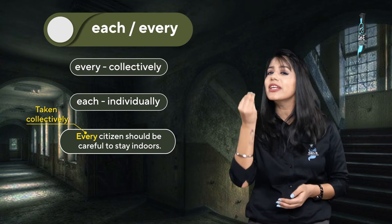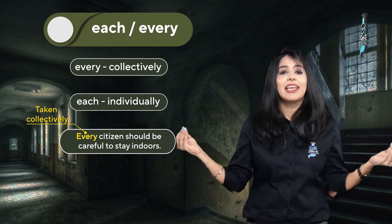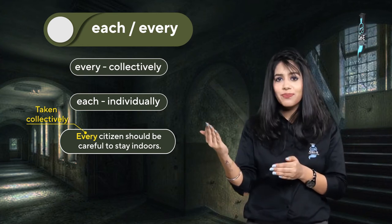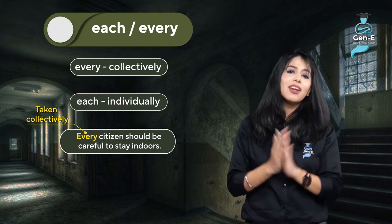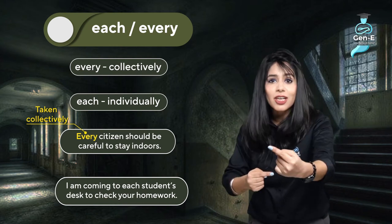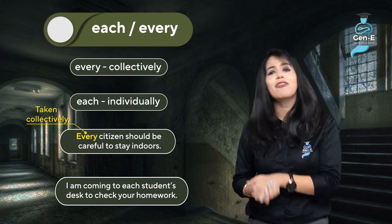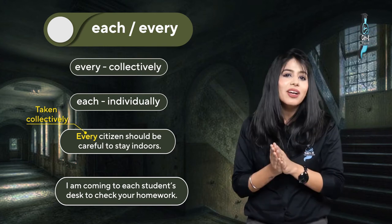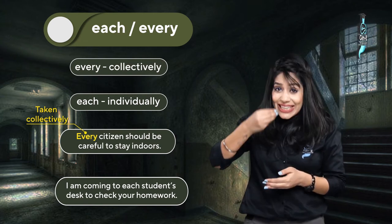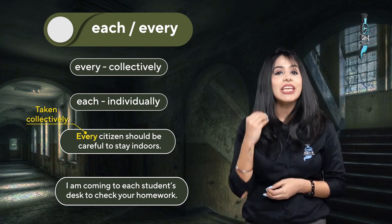लेकिन each जो word है, वो individually use होता है, जिसमें हम हर चीज को अलग-अलग लेते हैं. For example, एक class में the teacher can say to the students, 'Notebook खोल के रखो, because I am coming to each student's desk to check your homework.' इसका मतलब है you better have done your homework, because your teacher will personally be visiting each child. तो every कैसे use हुआ? Collectively, और each individually.